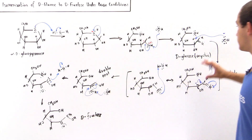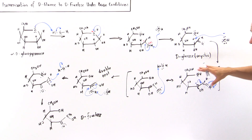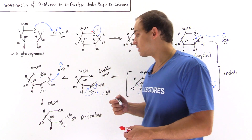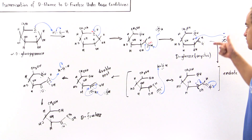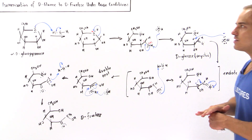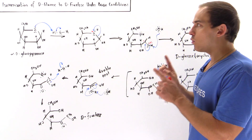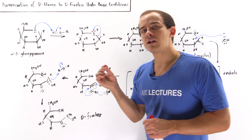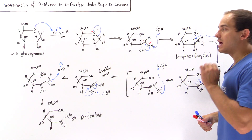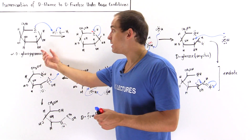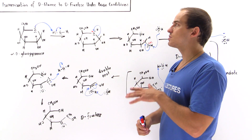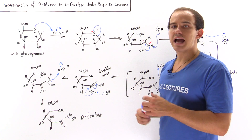This final molecule is the open-chain carbohydrate version of D-fructose. This D-fructose will then go on to form the cyclic version of the fructose molecule via the same process in reverse. This was the isomerization reaction of D-glucose into D-fructose. Importantly, D-glucose is an aldohexose, while D-fructose is a ketohexose — we replaced the aldehyde group in glucose with a ketone group in fructose. These two molecules are isomers because they share the same molecular formula.